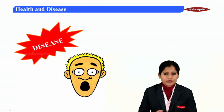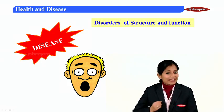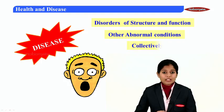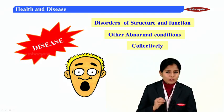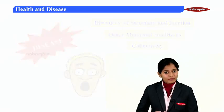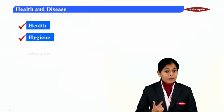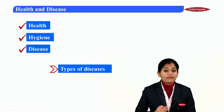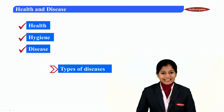If these are not maintained, it might lead to a condition called disease. Disease is defined as disorders of the structure and function, or other abnormal conditions, all of them collectively. In this module we have discussed the concept of health, the basic concept of hygiene, and an outline of disease. In the next module we will be talking about the different types of diseases. Thank you.